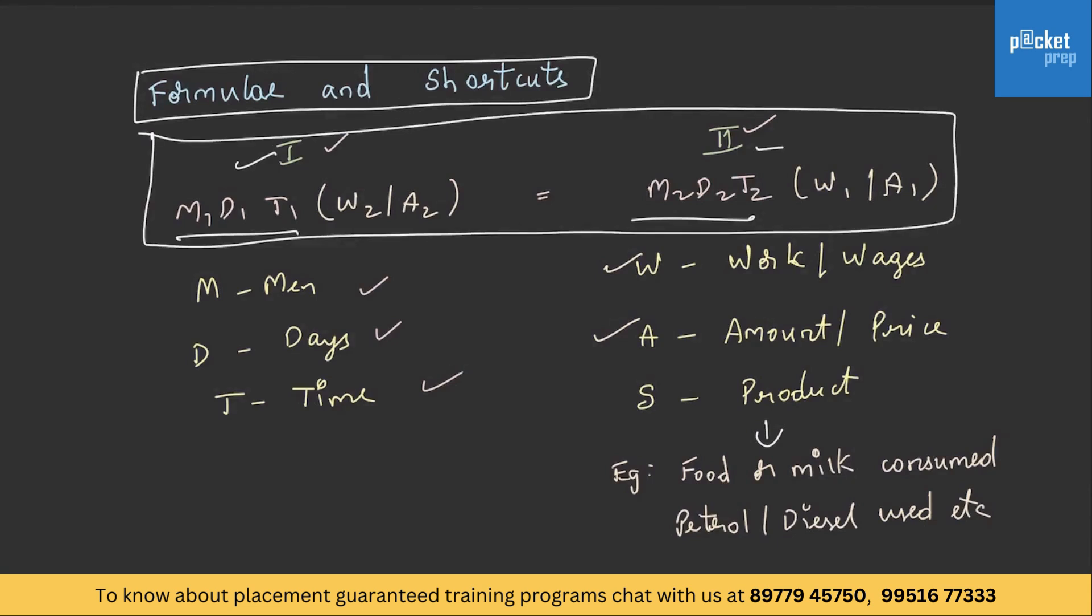This is the standard formula to solve the problems in chain rule. All the elements in statement 1 are written on one side and all the elements of statement 2 are written on the other side, except wages or work done or amount or prices or cost of items if given in the question. They are only interchanged, like what we have done here. You will be able to get a superior understanding when we use this formula in solving the problems. So let's try to do this.